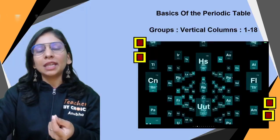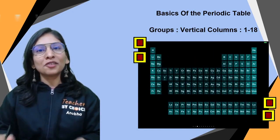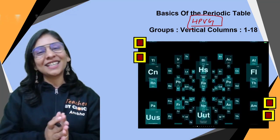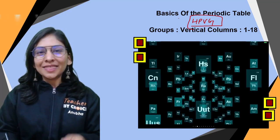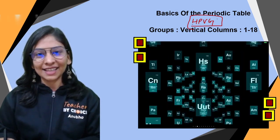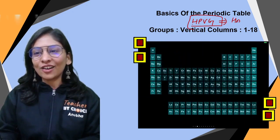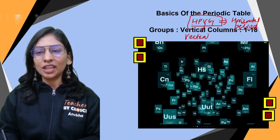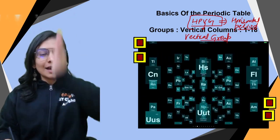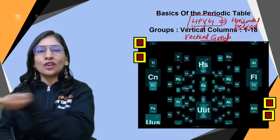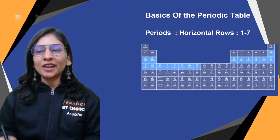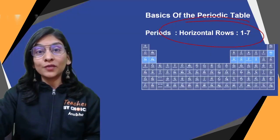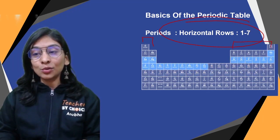An important exam question: given an element, how do you decide its period number and group number? You can remember it with the phrase 'Harsh Priam Very Generous' — HP VG: Horizontal is Period, Vertical is Group. In our periodic table, we have seven horizontal rows (periods) and 18 vertical columns (groups).